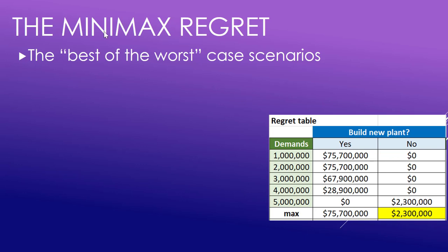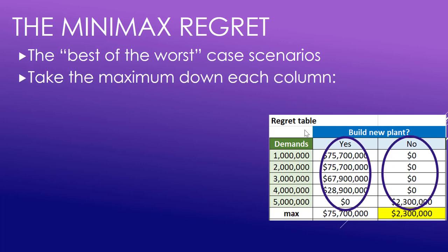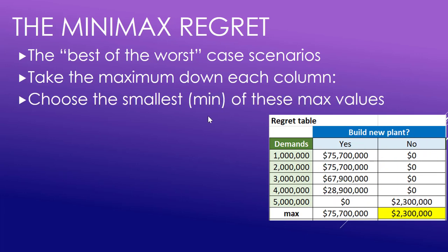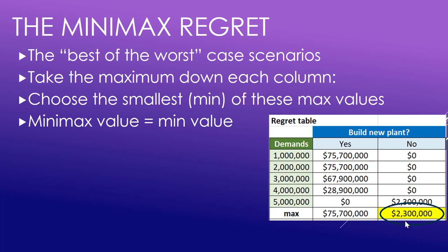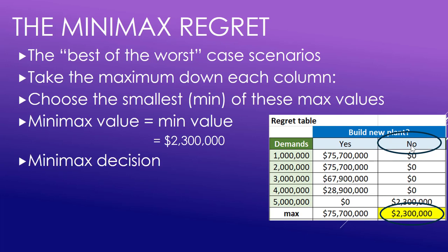Now let's examine what's called the minimax regret. This is like the best of the worst case scenarios. What we do first is take the maximum down each column, and then we take the smallest or the minimum of those values. Here are our maxima — the smaller of the two is the 2.3 million.